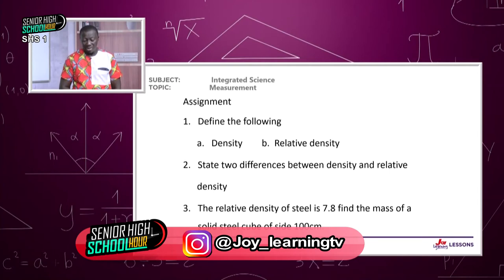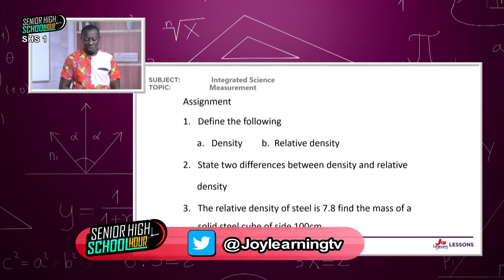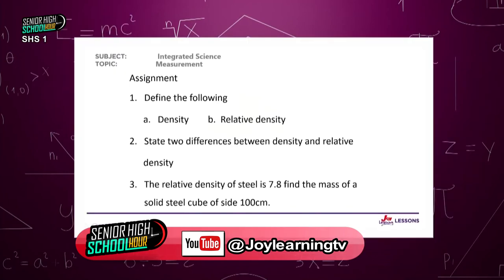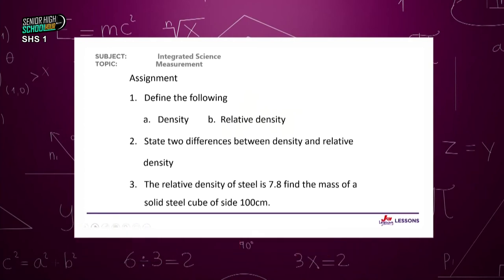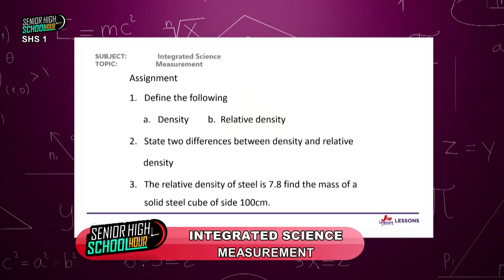Our time is almost up, but here is your assignment. Question one: define (a) density and (b) relative density. Question two: state two differences between density and relative density. Question three: the relative density of steel is 7.8 — find the mass of a solid steel cube of size 100 centimeters cube. Remember it's a cube, so the dimensions must be the same.